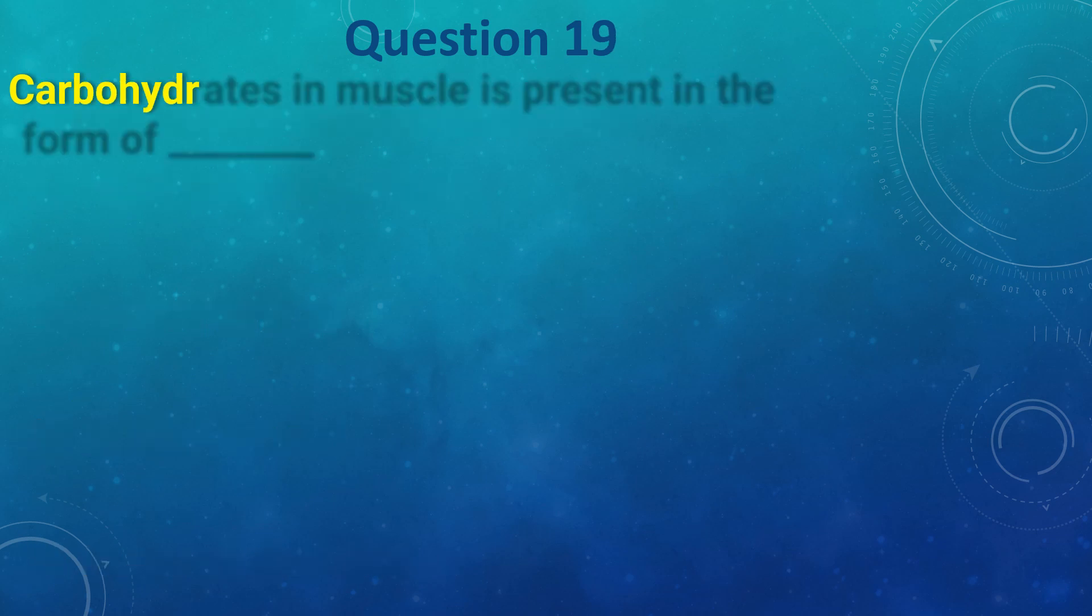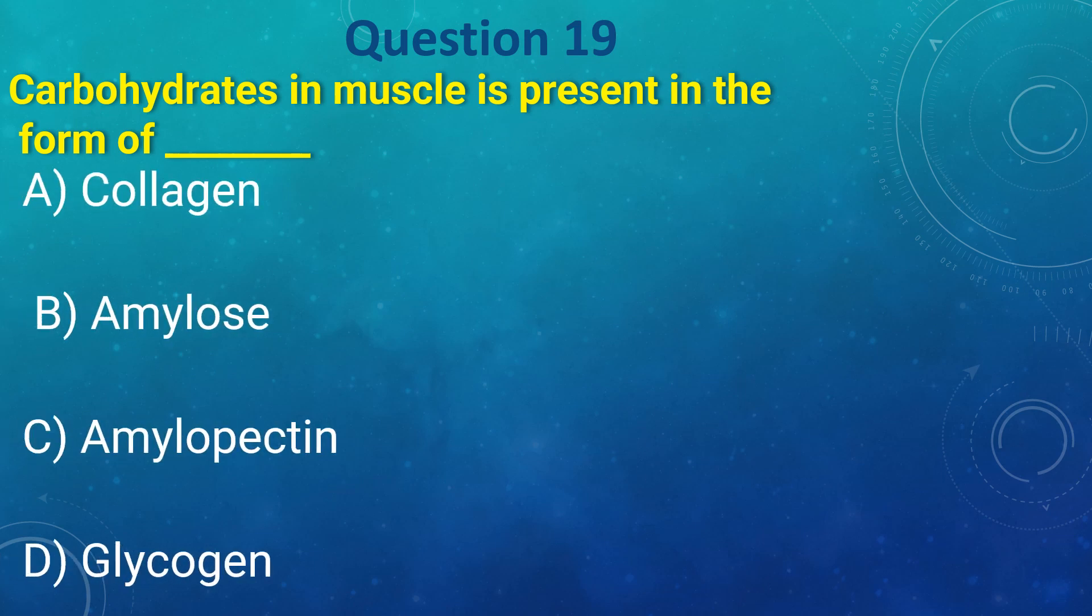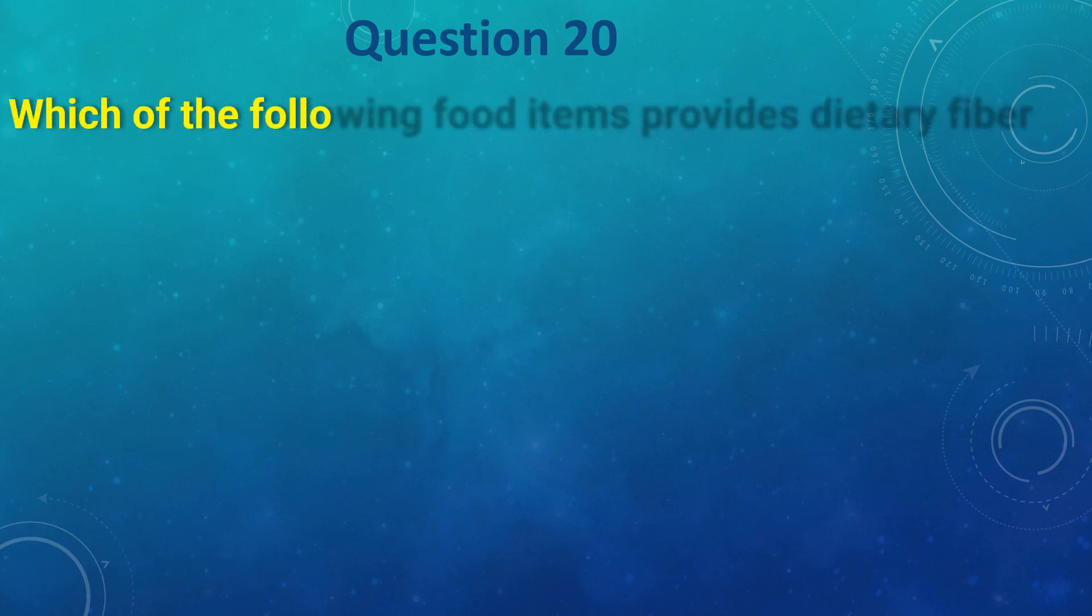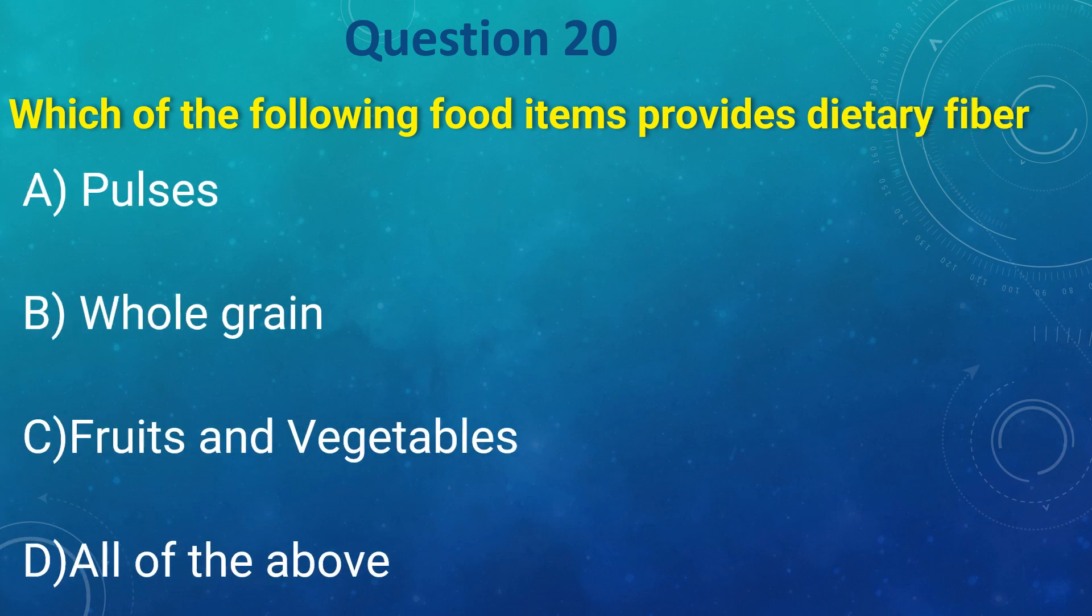Carbohydrate in muscle is present in the form of: a) glycogen, b) amylose, c) amylopectin, d) glycogen. Which of the following food items provide dietary fibers: a) pulses, b) whole grains, c) fruits and vegetables, d) all of the above. The answer is d) all of the above.